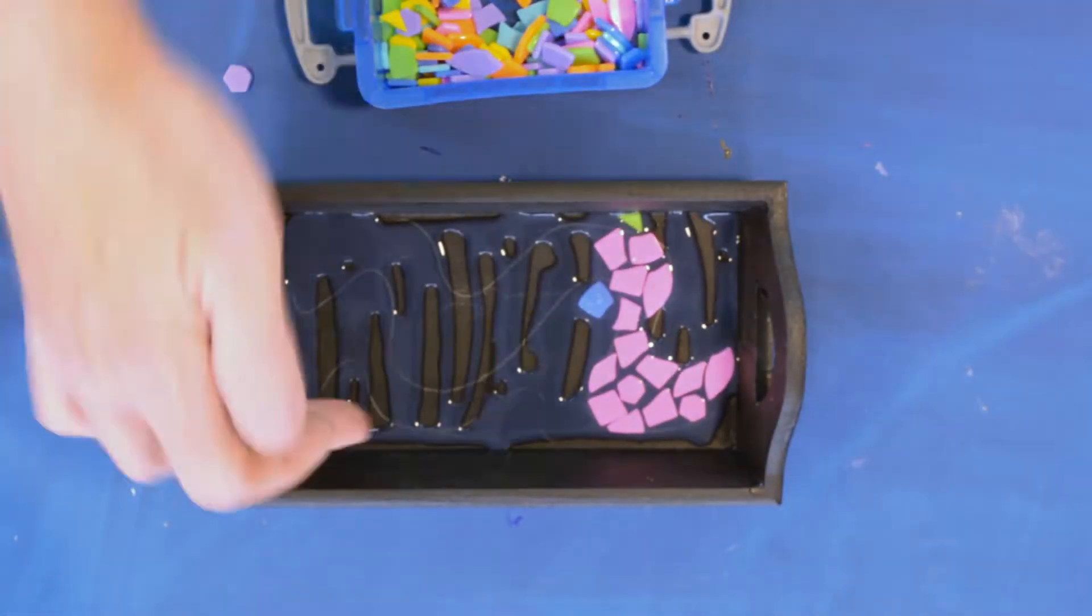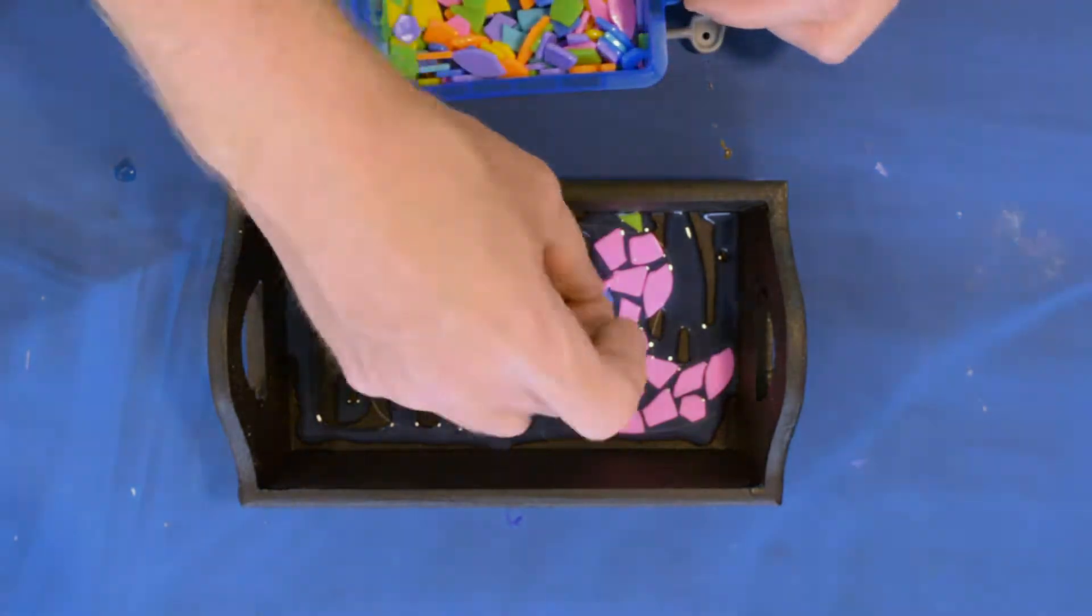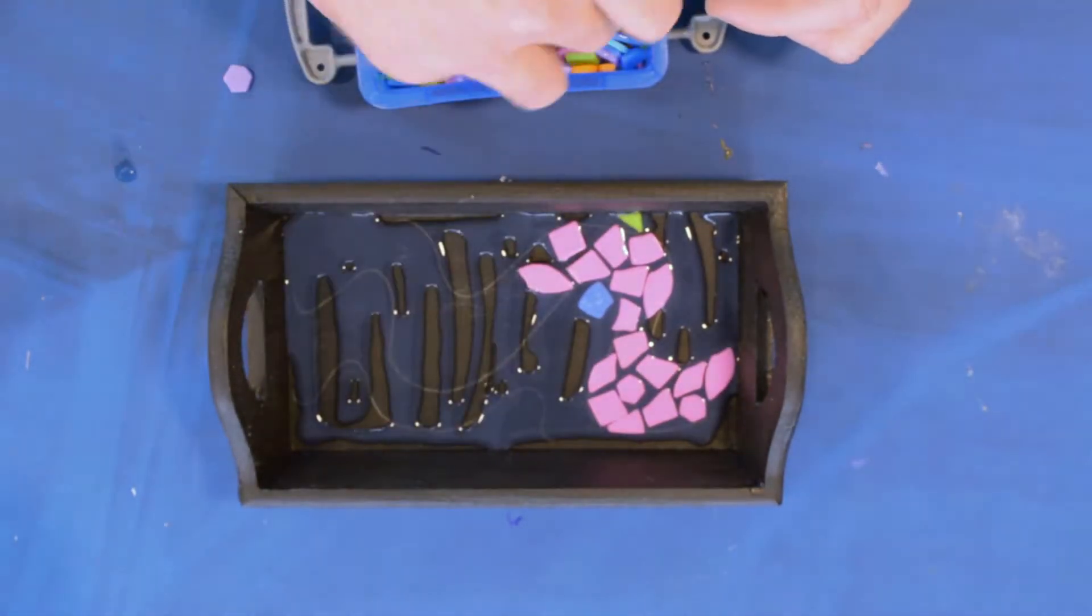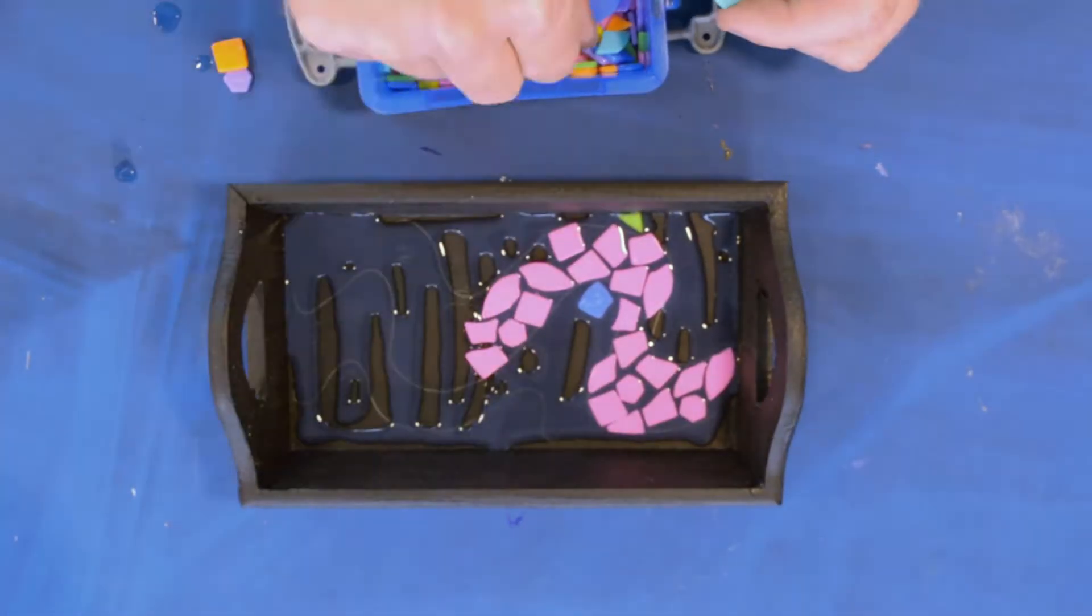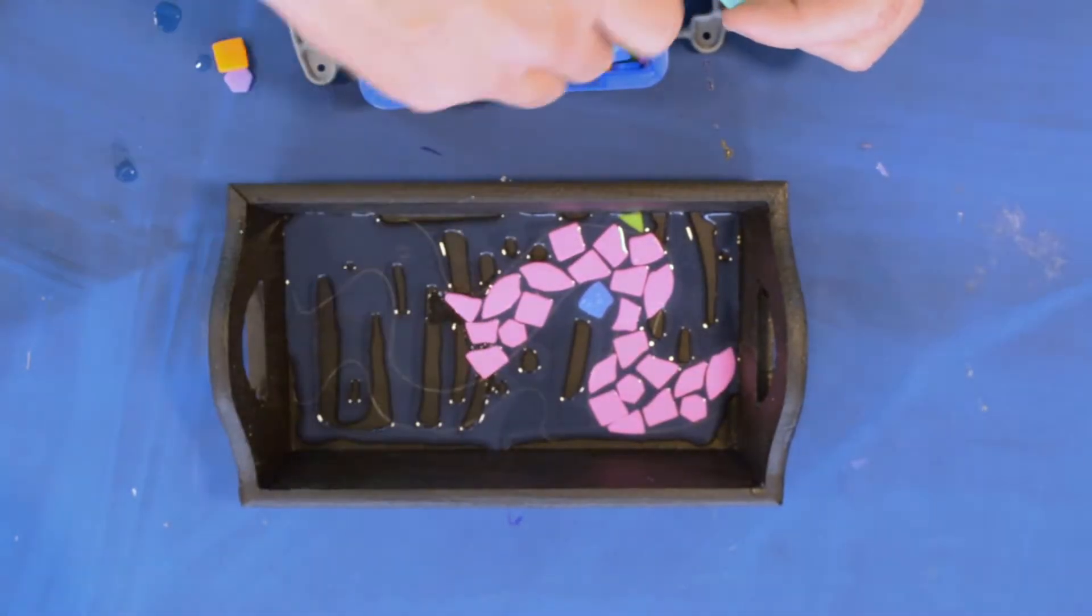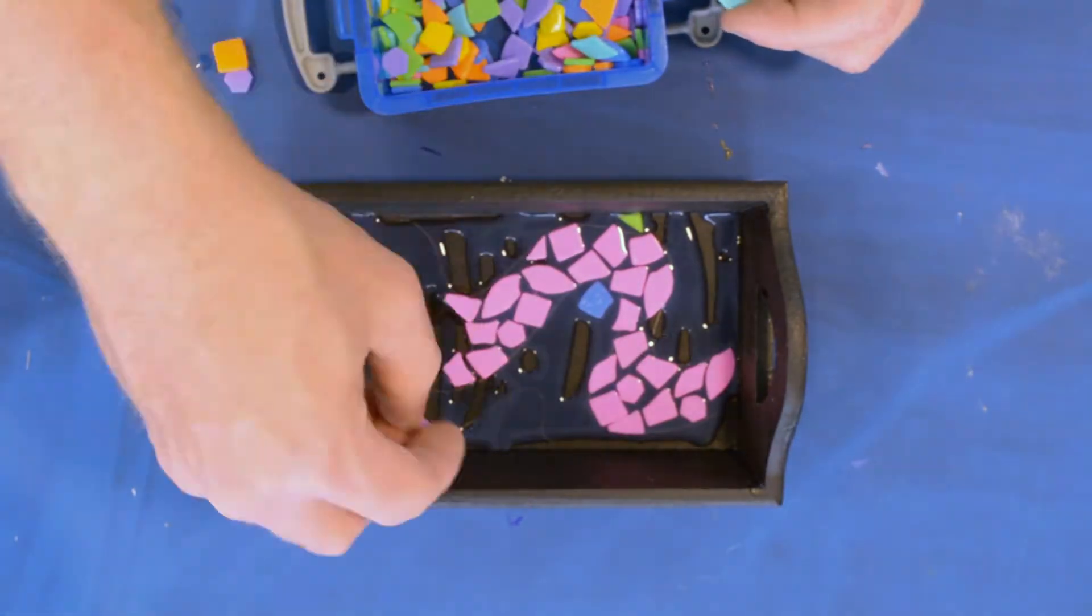Now in the kit we're going to give you enough to just sort of do two trays, so you can play around on the first tray. The tray itself is going to hold back the liquid glass so it doesn't sort of flow out everywhere. It kind of has like a honey consistency.